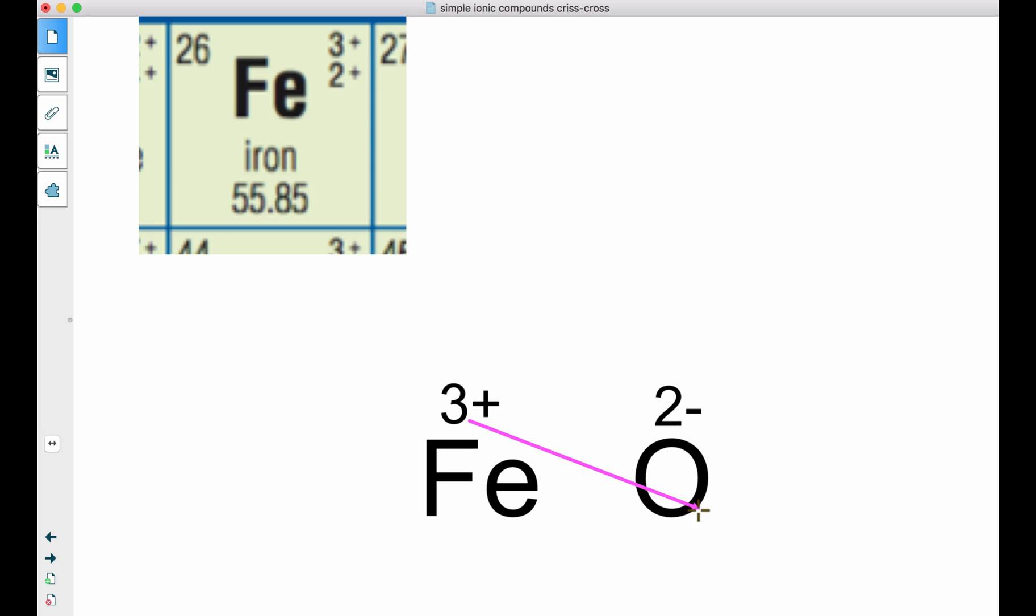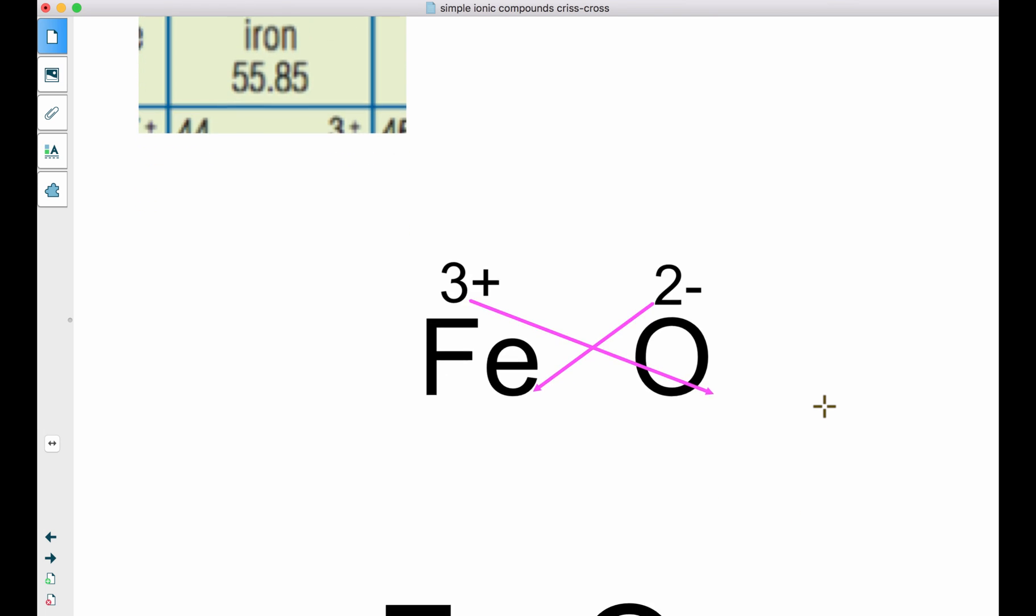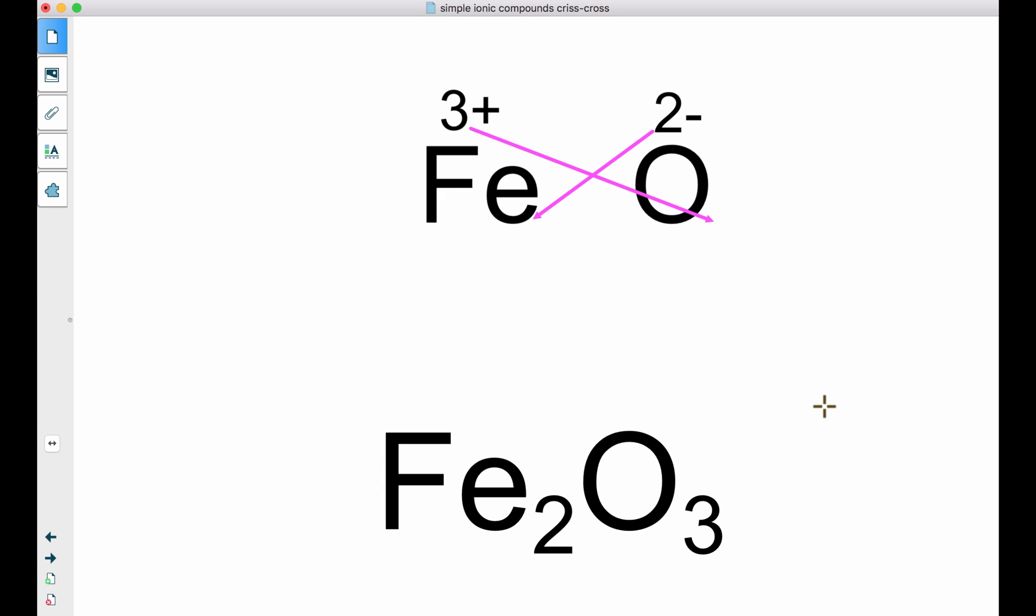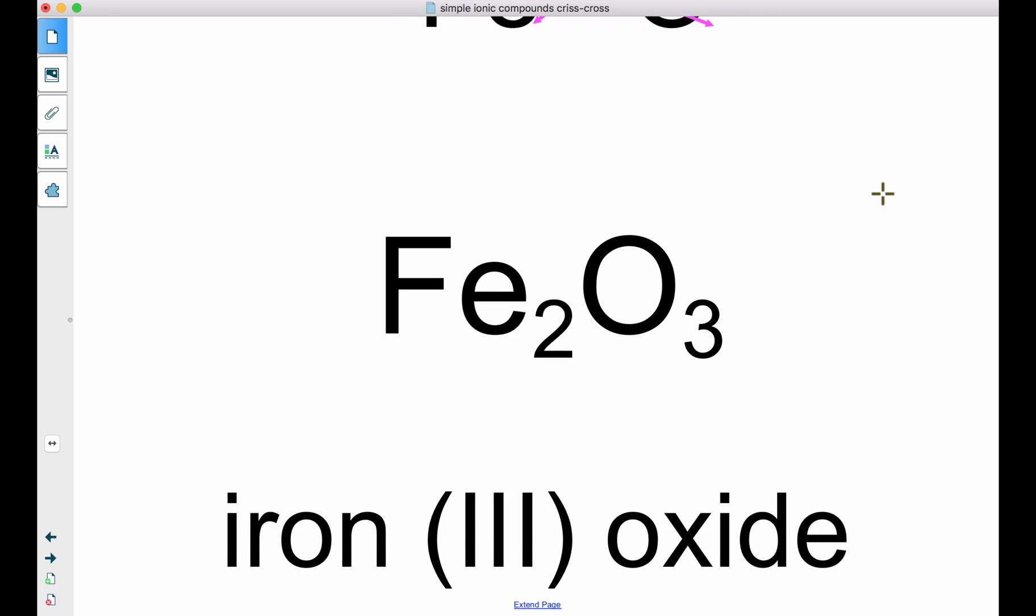Crisscross. We will need 3 oxygens for every 2 irons. So we have Fe₂O₃. So this would be an iron oxide. And since we used iron with a charge of 3+, we call it iron (III) oxide. Iron, brackets, Roman numeral 3, oxide.